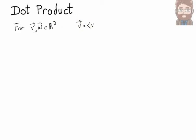First, I'll show you the definition for two vectors in R2, each with two components. I'll let V be the vector V1, V2, and W is the vector W1, W2.